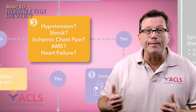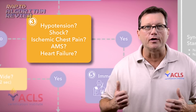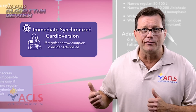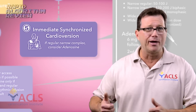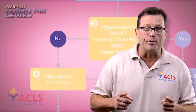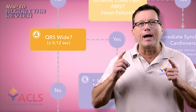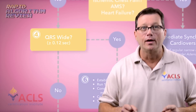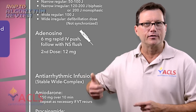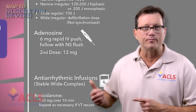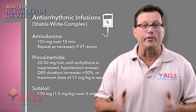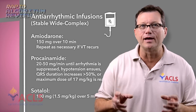Next, is the patient stable or unstable? If they're unstable and shocky, immediate synchronized cardioversion — doesn't matter if it's narrow or wide. If they're stable, is the complex wide or narrow? Narrow complex: first drug up, adenosine, 6 milligrams, rapid IV push. Wide complex: amiodarone, 150 milligrams over 10 minutes.